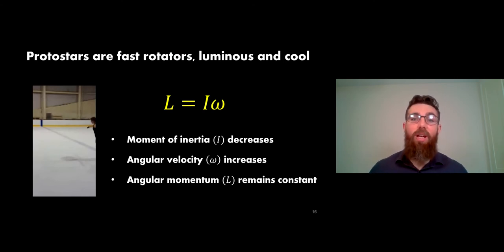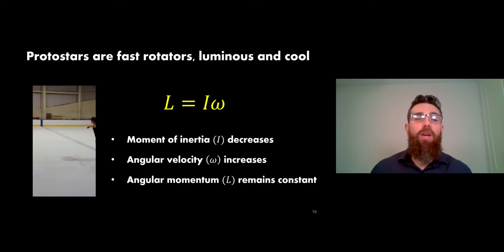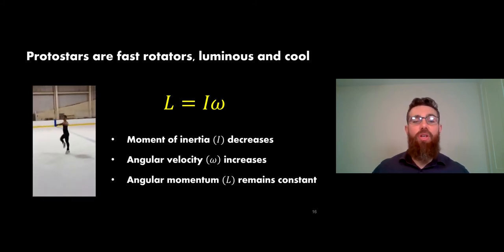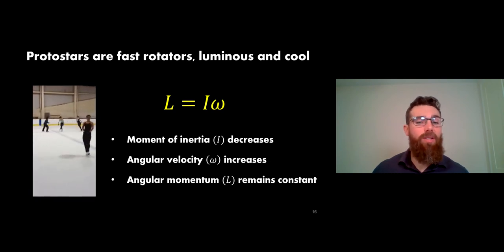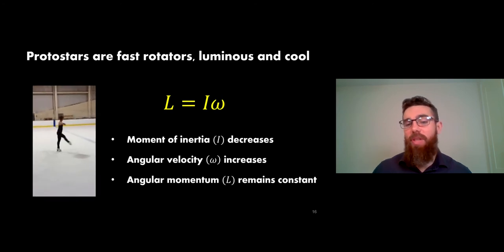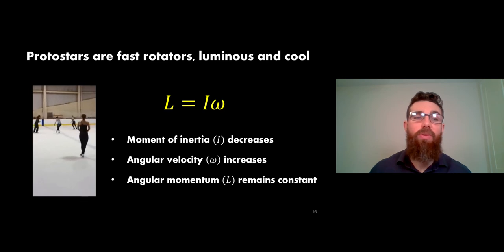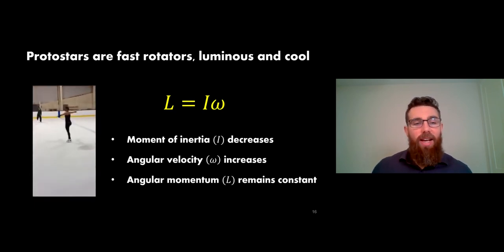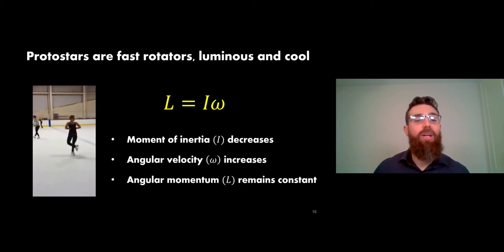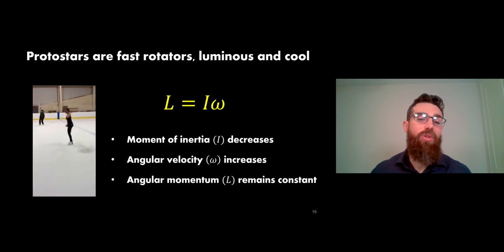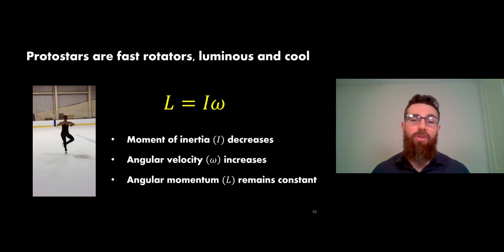Protostars are quite fast rotators - they're luminous and cool. They're luminous because they're actually quite large since they haven't fully collapsed yet, and they have fairly cool surface temperatures. Because they're fast rotators, the cloud of gas had some net rotation to start with, and as it collapsed, to conserve angular momentum they rotate faster. By collapsing, the moment of inertia has decreased - mass moved towards the rotation axis - so to keep angular momentum the same, angular velocity increases. This is like an ice skater pulling their arms in to spin faster.